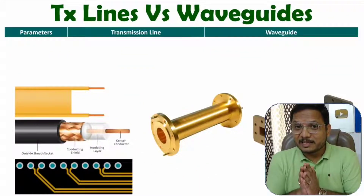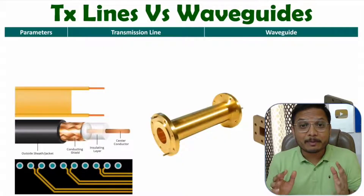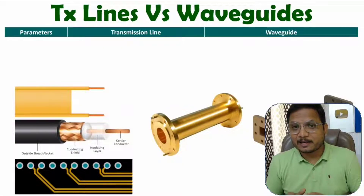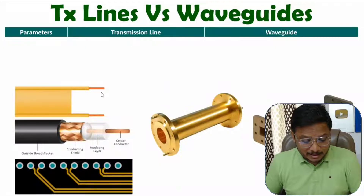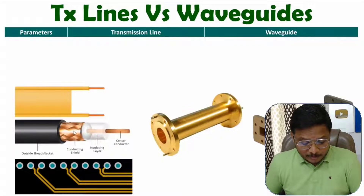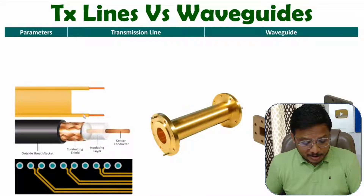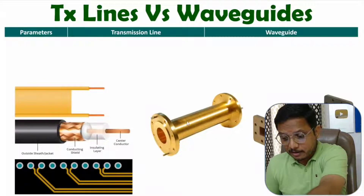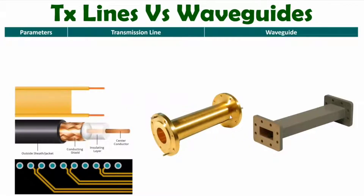Hello friends, welcome to Engineering Fanta family. In this video I'll be comparing transmission lines with waveguides. If you observe the basic structure of a transmission line, there are three categories: two parallel wire transmission line, coaxial cable transmission line, and microstrip transmission line. In a transmission line we have two parallel conductors, while in a waveguide structure we have a circular waveguide and a rectangular waveguide — a hollow metallic tube.